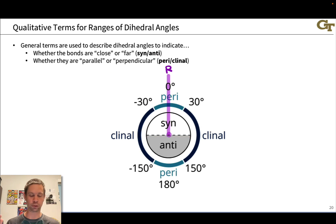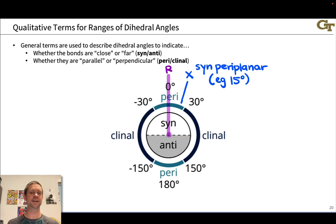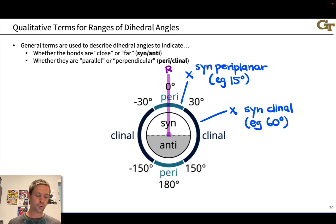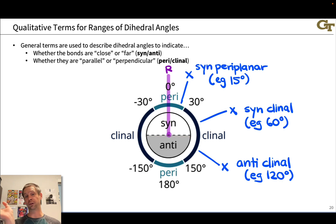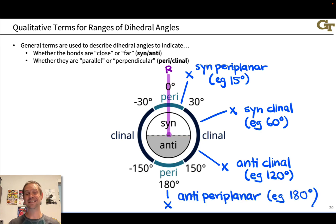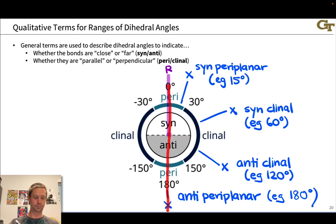Within those classes, we can have either clinal or periplanar relationships. Peri means the bonds are almost aligned — almost parallel to each other — while clinal means they're more perpendicular. For example, with a hypothetical front bond at zero degrees, a syn-periplanar arrangement has a dihedral of about 0-15 degrees. Past about 30 degrees we call that syn-clinal, which is a term we could use to represent the gauche conformation. Continuing to rotate, we get to anti-clinal where the dihedral is greater than 90 degrees, and past about 150 degrees we're in the anti-periplanar situation, which tends to refer to exactly 180 degrees since all four atoms are coplanar in that arrangement.